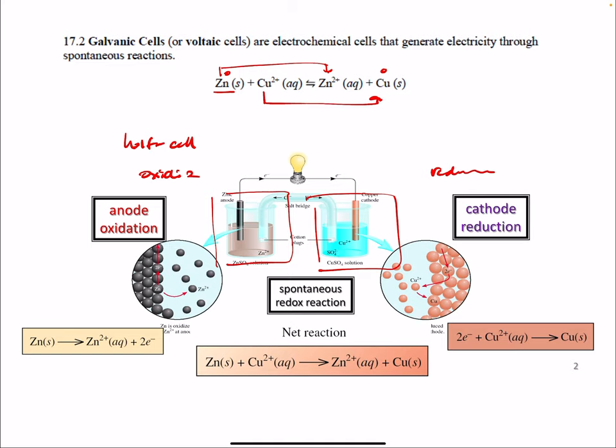And what you need for these kind of voltaic cells is a metal. Here we have zinc metal in zinc ion. It has zinc sulfate in there, but we know that if zinc sulfate is soluble, and it is, it'll dissociate to give you zinc ions and sulfate ions. So we have zinc ions, we have sulfate ions in there.